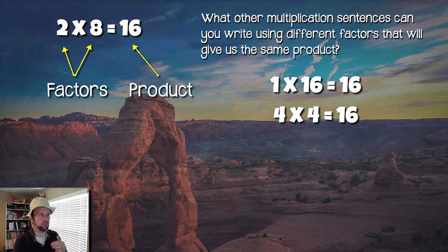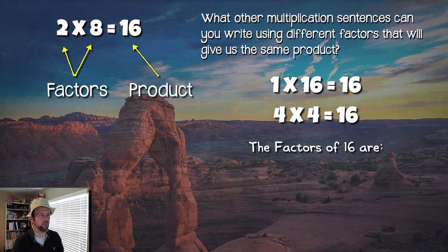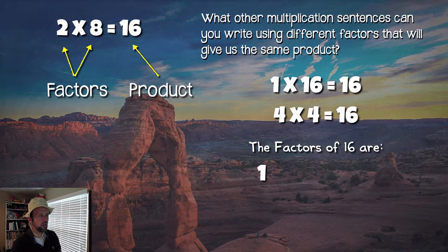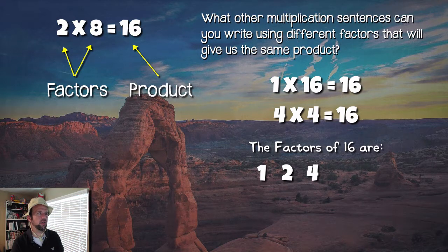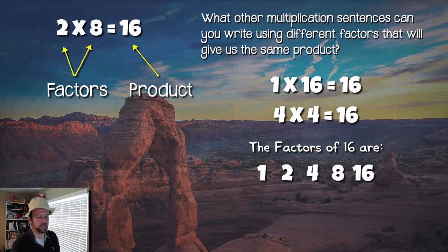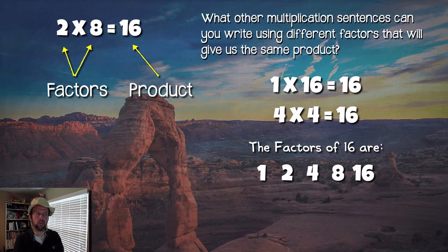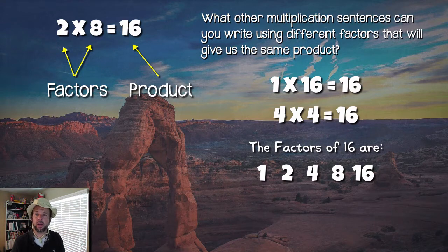I heard some of you say 1 times 16, because we didn't find that one yet. So 1 times 16 was still hiding out here in the desert. And right below that — 4 times 4, there's another one that would give us 16. So the factors of 16 that we've found are 1, 2, 4, 8, and 16. How do I know that these are all of the factors of 16, that we found everything we could find here in the desert?